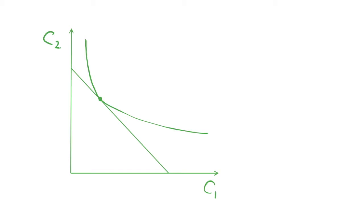In the last video we derived the intertemporal budget constraint, and in this video we're going to look at borrowers and savers, and what happens when we change the interest rate. We have a diagram with consumption in period 2 on the y-axis and consumption in period 1 on the x-axis. The budget constraint is drawn as a straight line, with indifference curves for the consumer. The consumer maximizes utility at the tangency point between the budget constraint and the indifference curve, as this is the highest indifference curve they can reach.